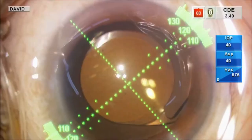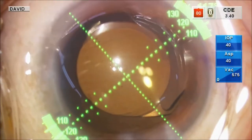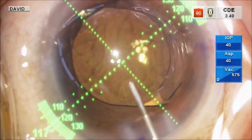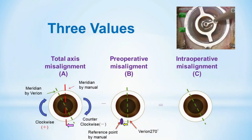These two meridian differences were measured. In this case, there is an 11-degree misalignment. We measured three misalignment values between two methods in the same eye. Total axis misalignment is a discrepancy of the intended steep meridian between two methods. Preoperative misalignment is a discrepancy of the 6 o'clock reference point by manual method and 270 degrees by image-guided system. Intraoperative misalignment is the value of total misalignment subtracted by preoperative misalignment.